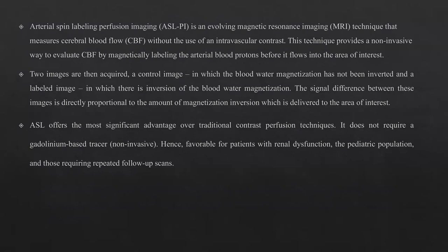This technique provides a non-invasive way to evaluate cerebral blood flow by magnetically labeling the arterial blood protons before it flows into the area of interest. Two images are required: a control image and a labeled image. A control image is one in which the blood water magnetization has not been inverted, and a labeled image is one in which there is inversion of the blood water magnetization. The signal difference between these two images is calculated, which is directly proportional to the amount of magnetization inversion delivered to the area of interest.